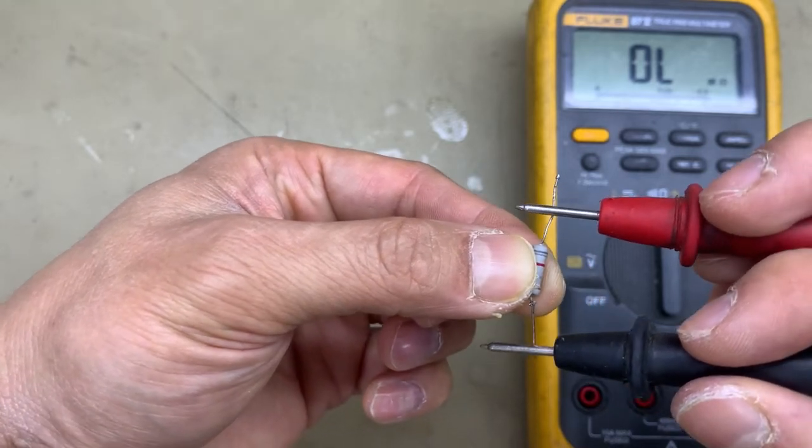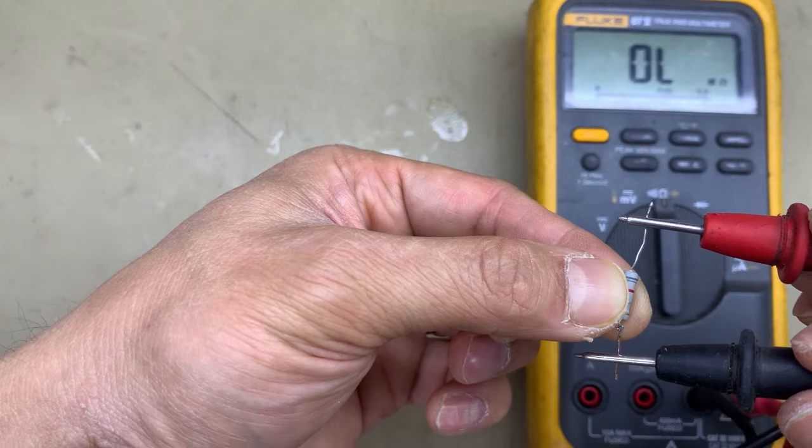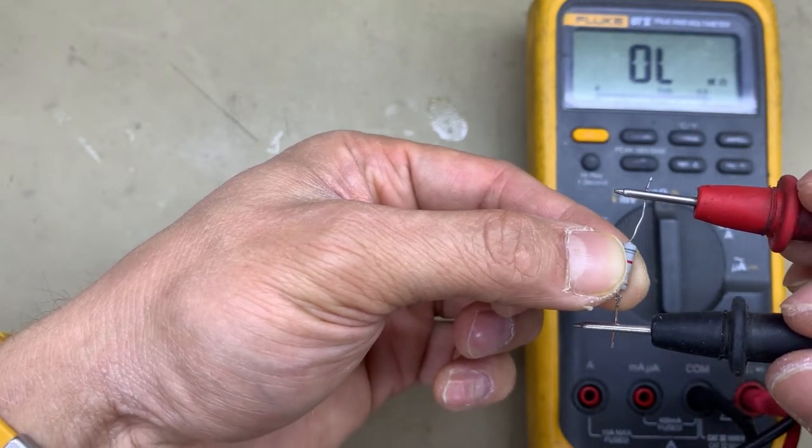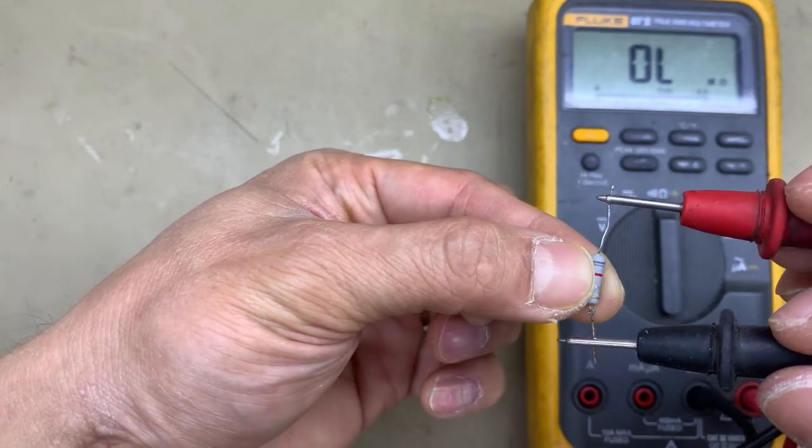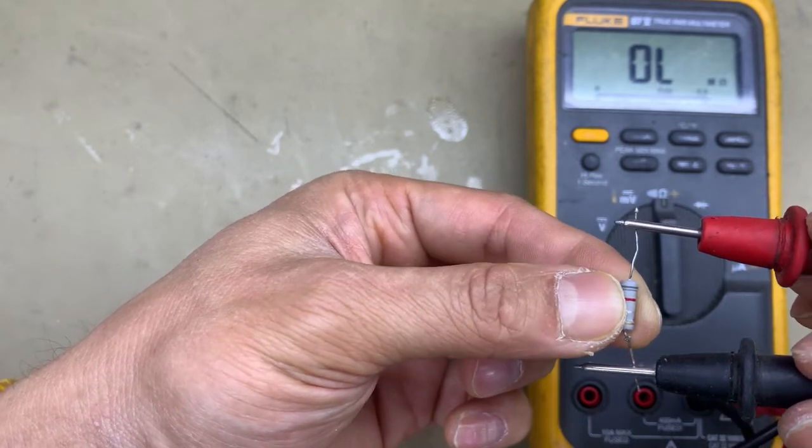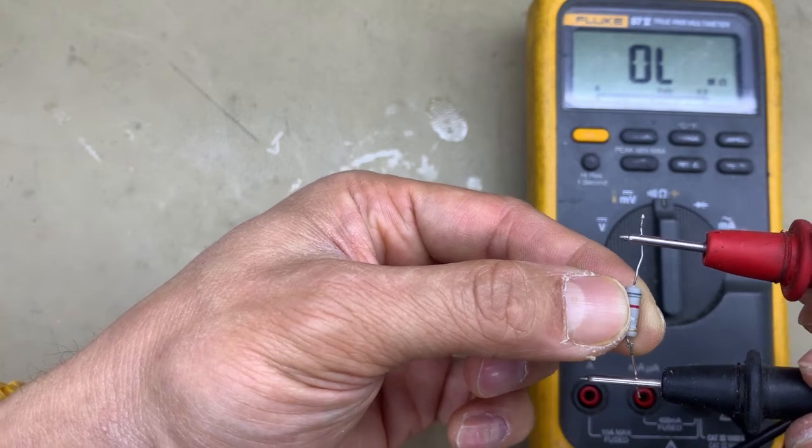There is no reading. As we can see, the multimeter shows no reading. No resistance reading. There should be 8.2 ohms, but there's no reading, so the resistor is defective. The resistor is open. If there is no reading, the resistor is open, the resistor is defective.